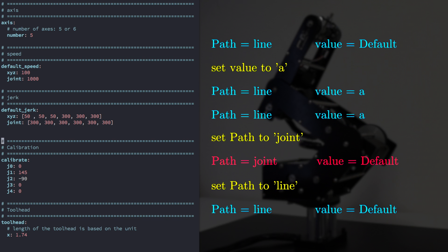For both speed and jerk, when you give the robot a move command, the robot will move at the default values. If you specify your path as line, the robot will move with the default xyz speed and xyz jerk. If you change the speed or the jerk, the robot will continue to move with those values until changed again, or if you change the path parameter to joint. Then if you change back to line, the robot will move with its default speed or jerk values.